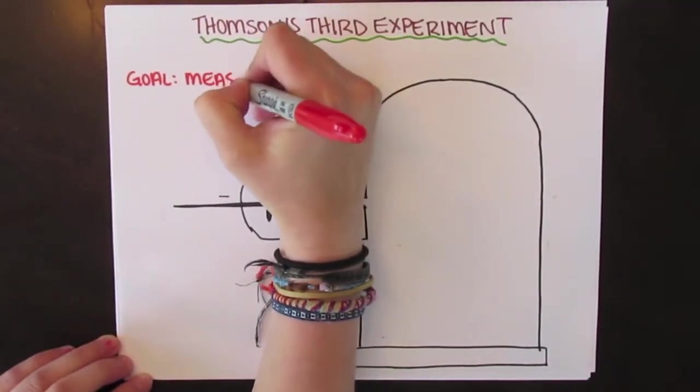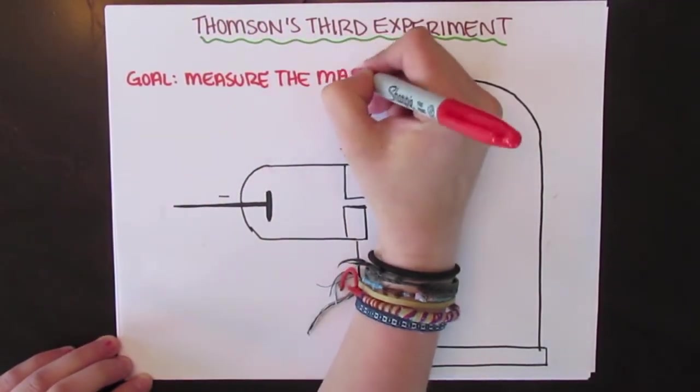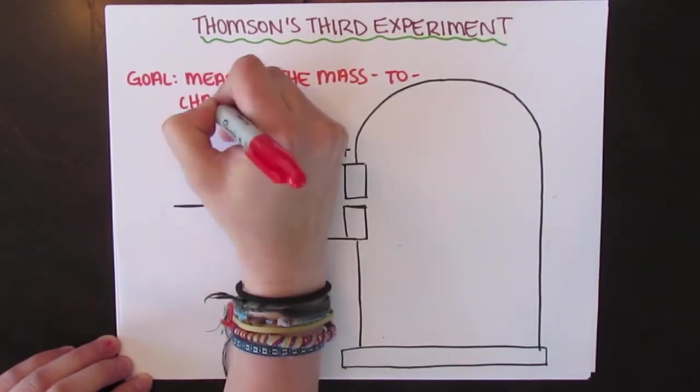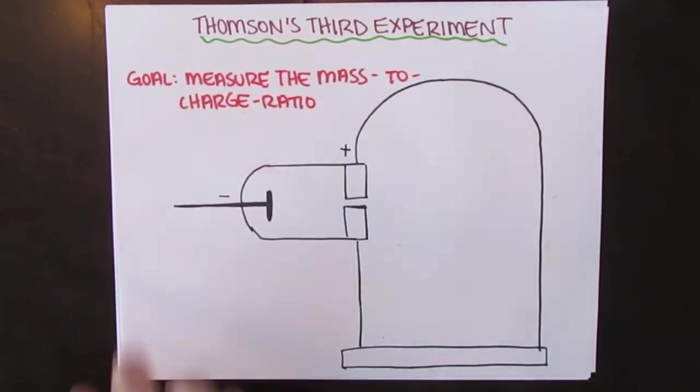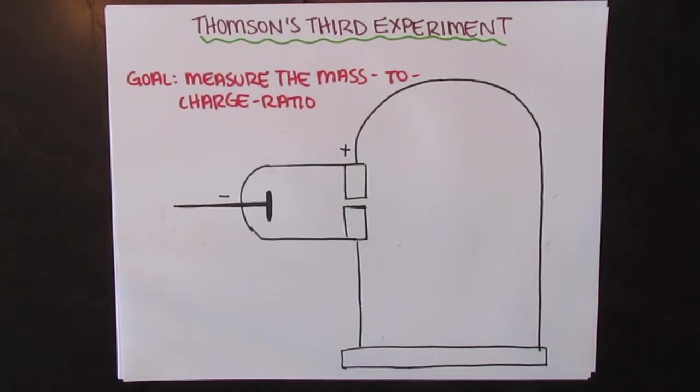In his third experiment, Thomson wanted to see if he could measure the mass-to-charge ratio, that is, the amount of mass relative to the proportional amount of charge.